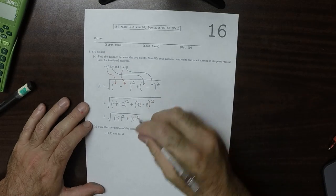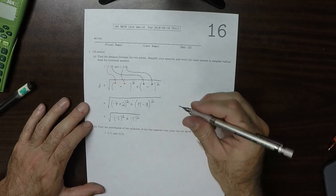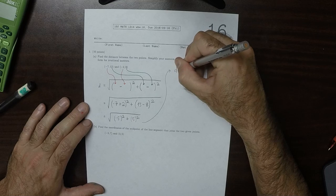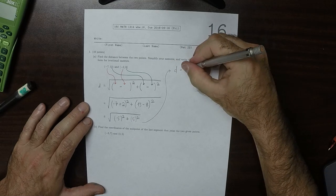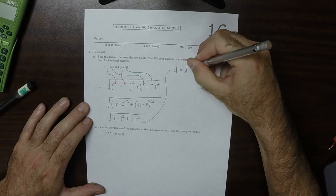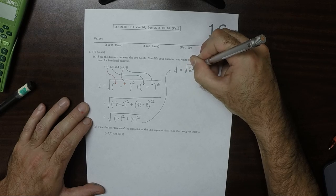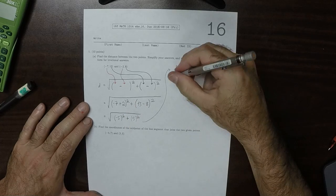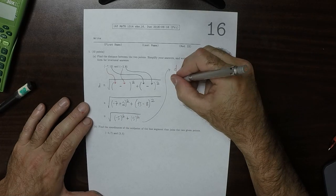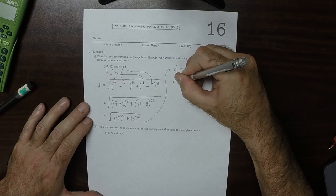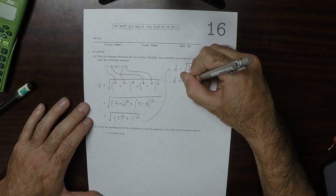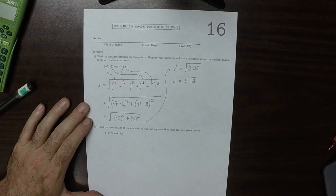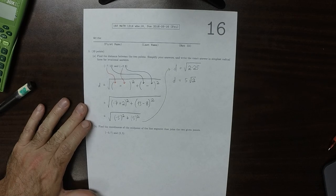That would be 25 plus 25, so d is square root of 2 multiplied by 25. But we were told to simplify the radical, so that 25 can come out as a 5, so that would be 5 square root 2. The distance between those two points is 5 square root 2.